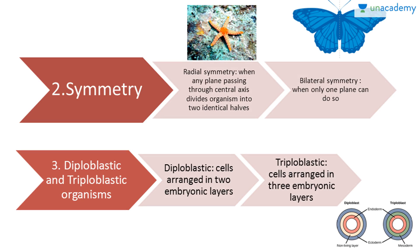The first is radial symmetry, shown by starfish, where any plane passing through the central axis divides the organism into two identical halves. Bilateral symmetry is when only one plane can do so, like in a butterfly. Third, diploblastic organisms have cells arranged in two embryonic layers, and triploblastic organisms have cells arranged in three embryonic layers.